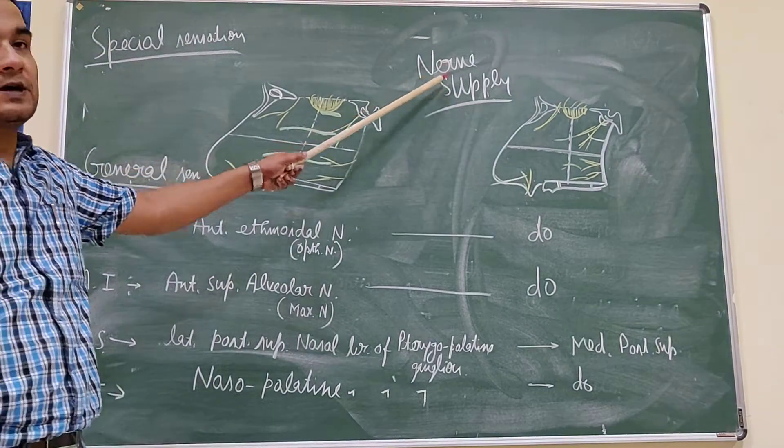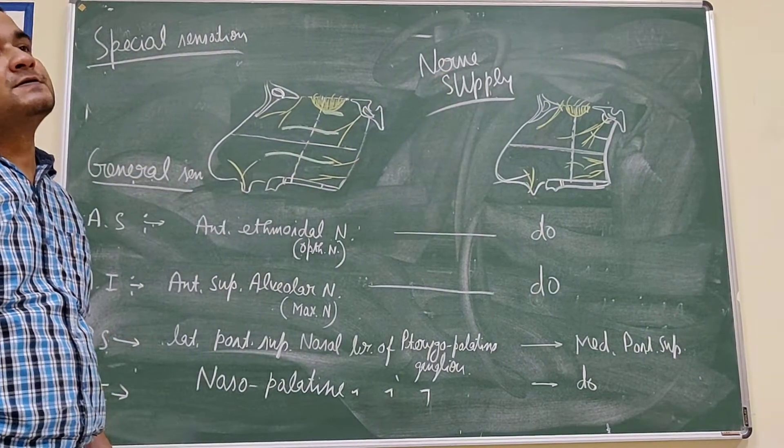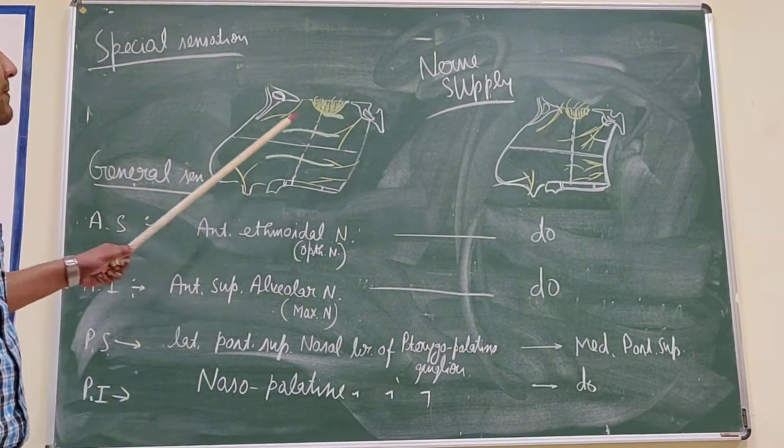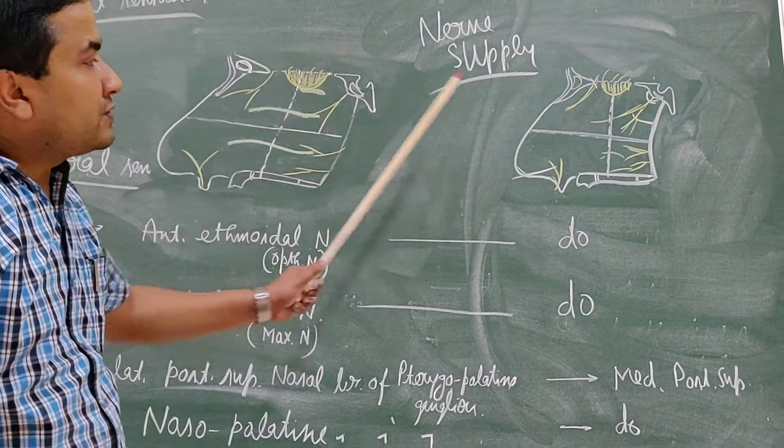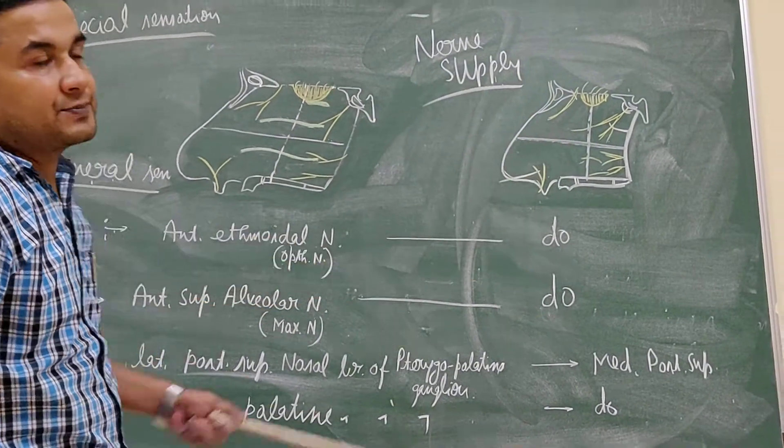Now the nerve supply. Same like the arterial supply, it is the lateral wall of the nose and the nasal septum.